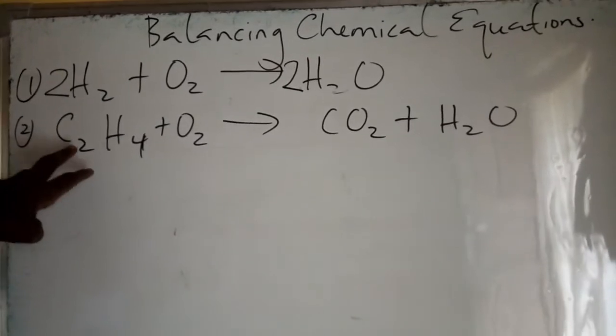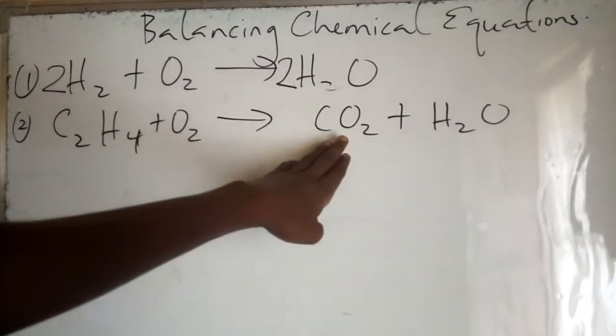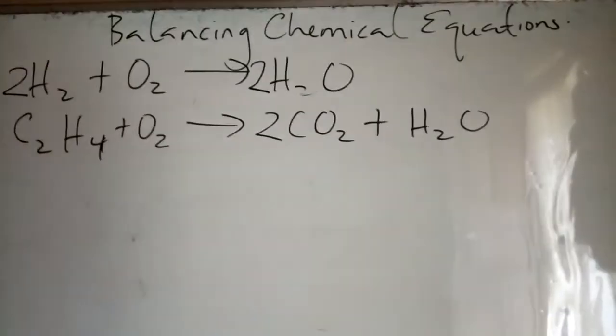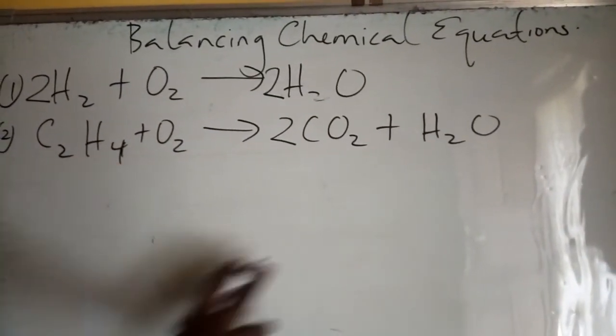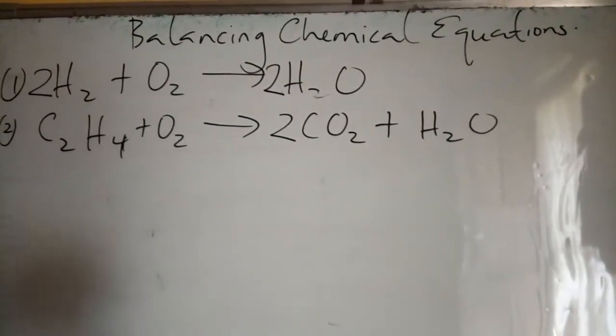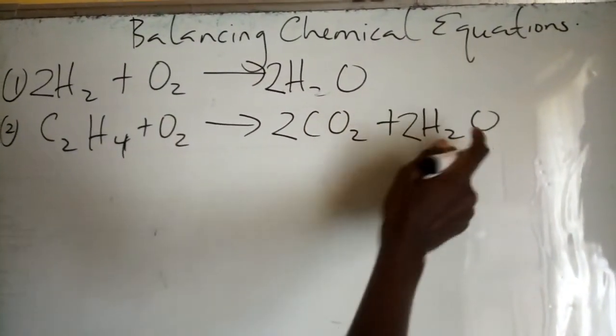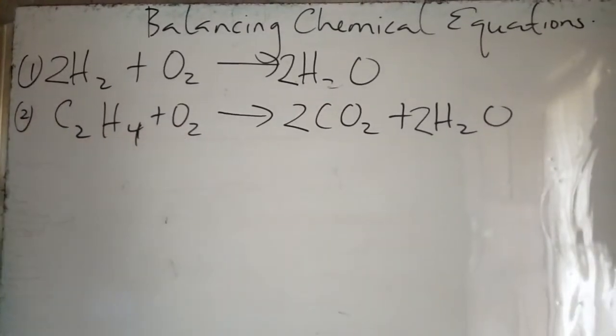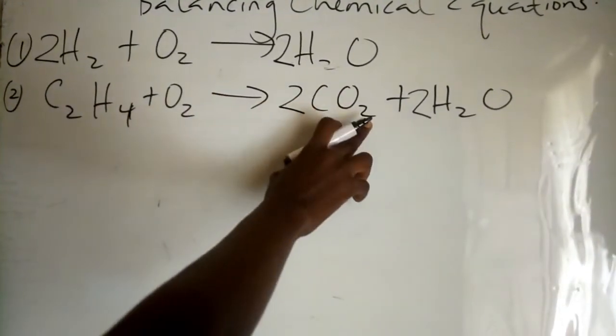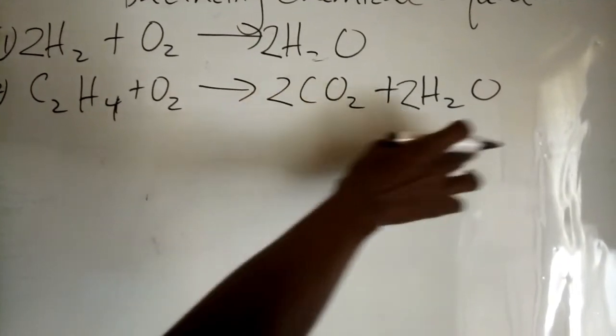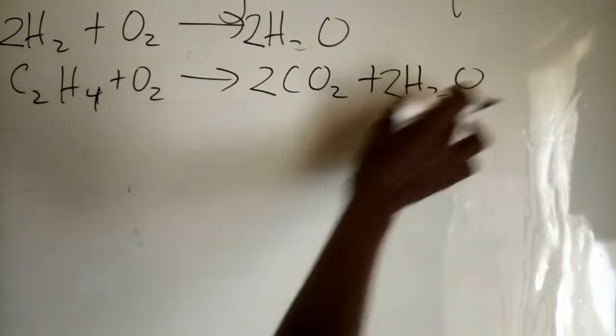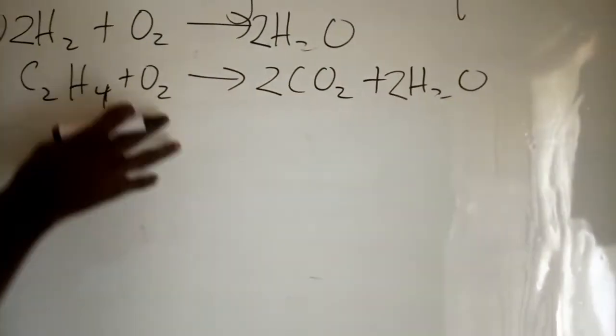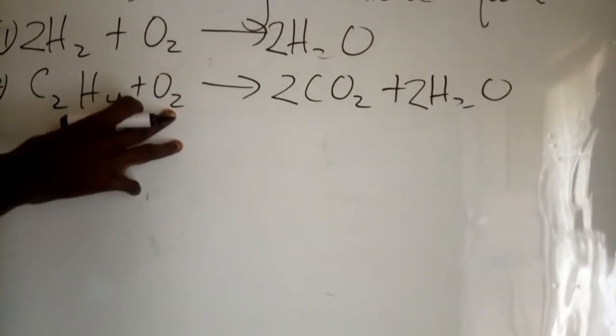For the next example, C2H4 + O2 → 2CO2 + 2H2O, we have four plus two equals six oxygen atoms on the right hand side and two molecules of oxygen on the left hand side. So what number do we multiply by two to get six?